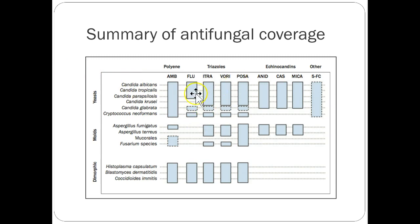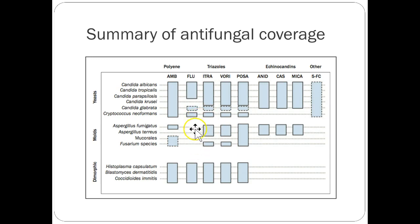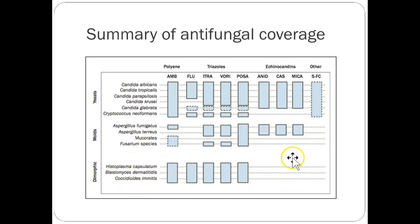If you want to know what covers what, there's a nice chart showing the different drugs. Amphotericin B is abbreviated as 'Am,' and you can see the azole antifungals — fluconazole, itraconazole, voriconazole, etc. The dotted line indicates 'sometimes covers.' Fluconazole drops off for aspergillus-type infections. Posaconazole, the oral drug, is actually quite broad-spectrum. Echinocandins don't cover some of these bugs, but we generally aren't looking at those types of fungal infections in the most common severe infection scenarios.